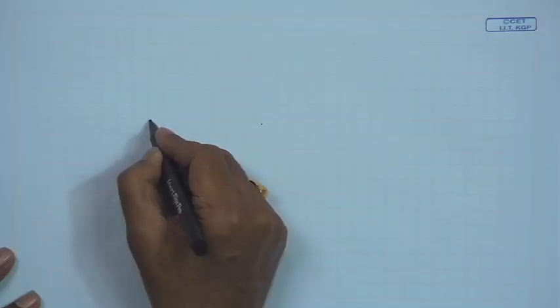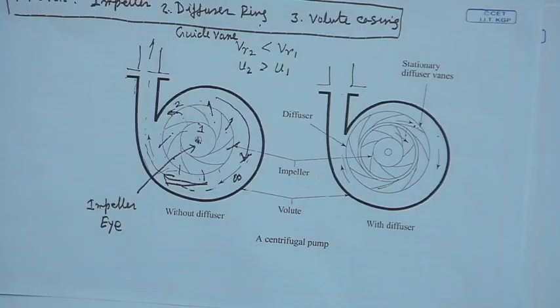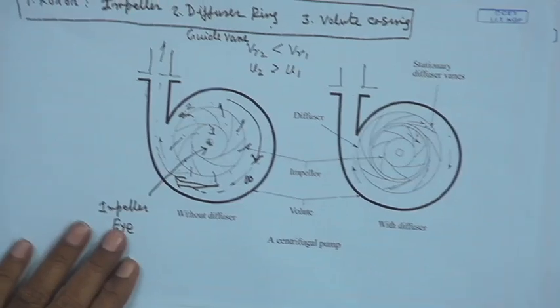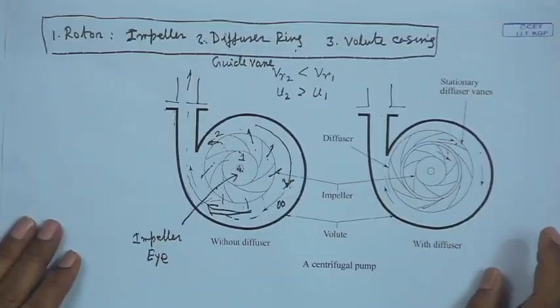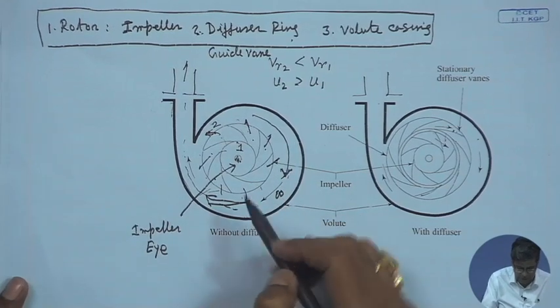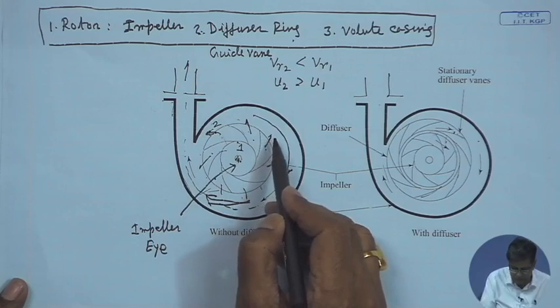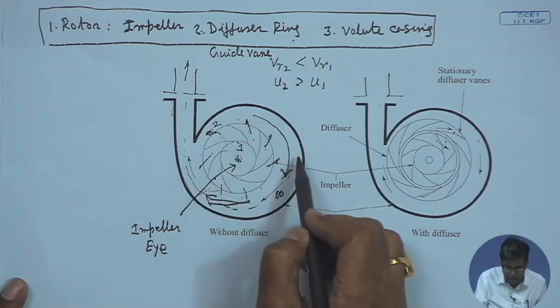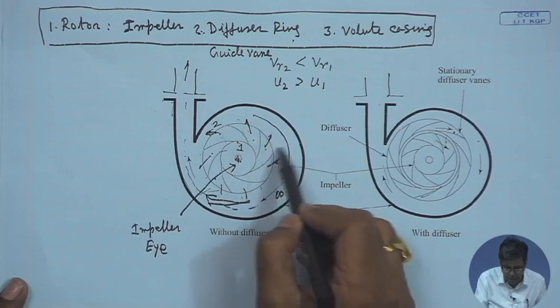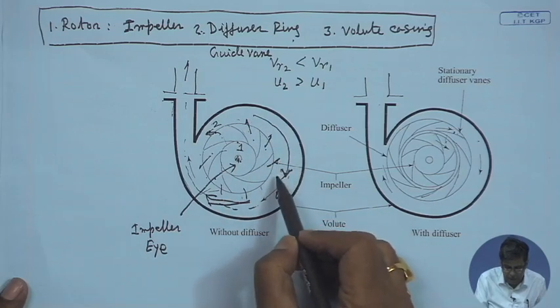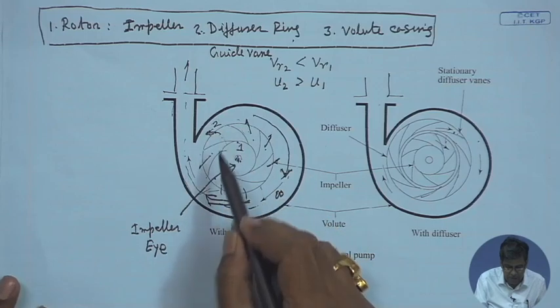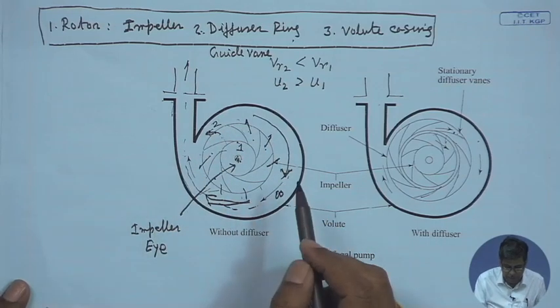The volute is the spiral casing or scroll casing. We already recognized earlier that the impeller has a volute casing, where the flow comes out of the impeller passage into this spiral casing. In the direction of flow, this spiral casing provides an area which is increasing, and ultimately the kinetic head is converted to static pressure head.